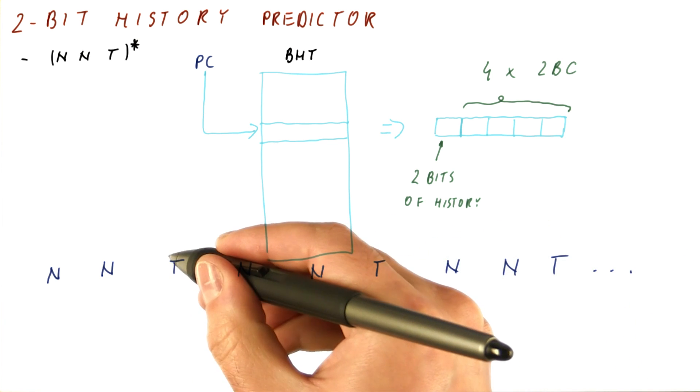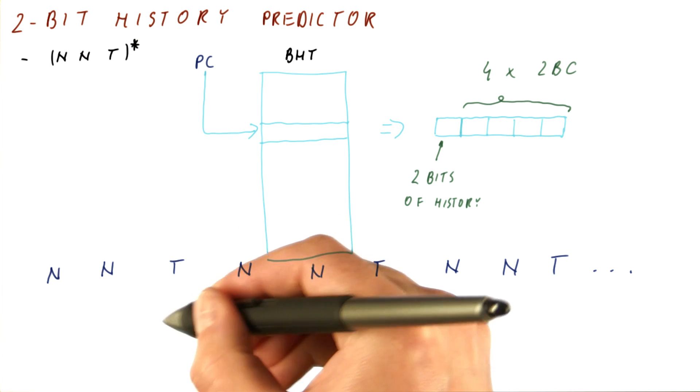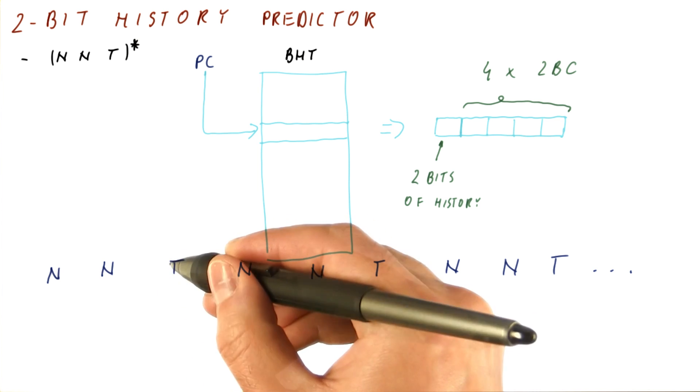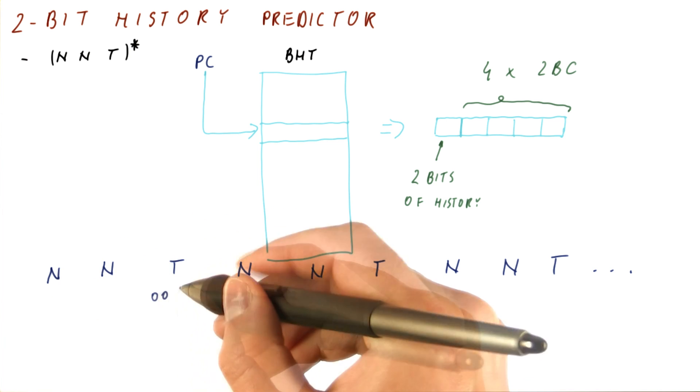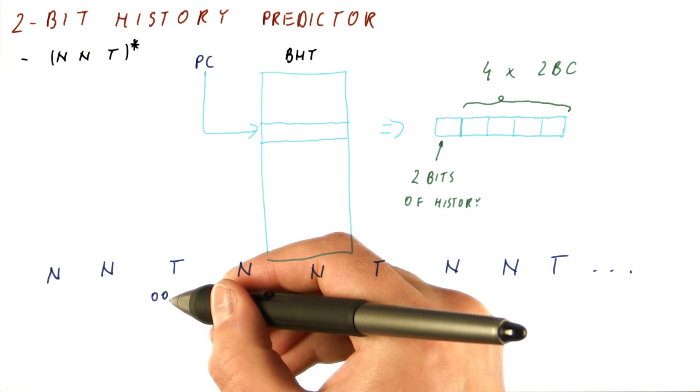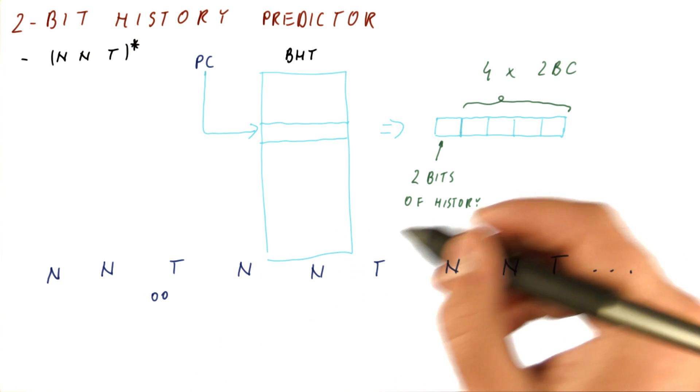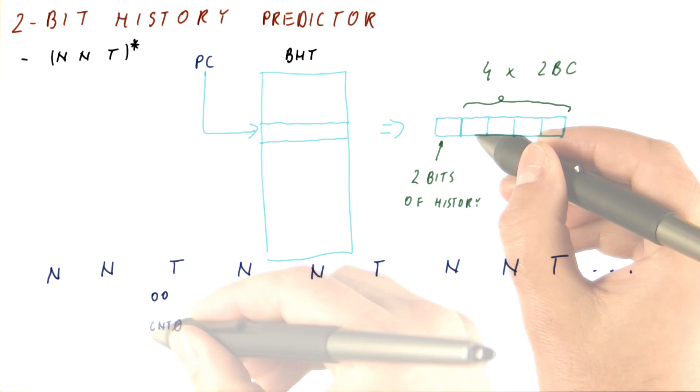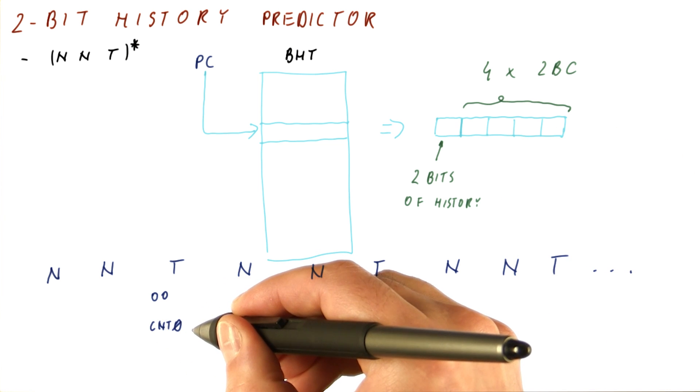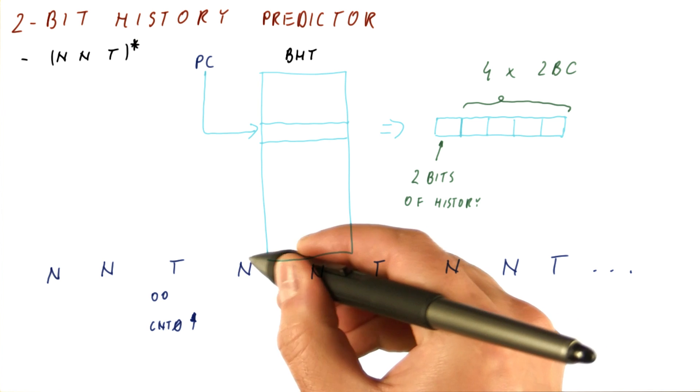When we are seeing the outcome of T and trying to predict it, that is we are trying to predict what will become T, our two bit history will be 0, 0. It's saying that the last two outcomes we have seen have been both not taken. This history will make us use this counter here. So that counter, which we will call counter number 0, will be counting up.